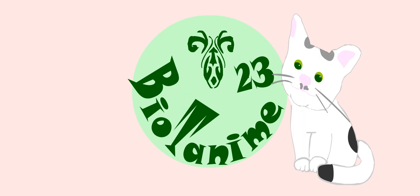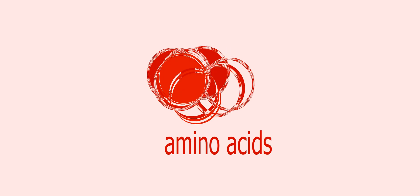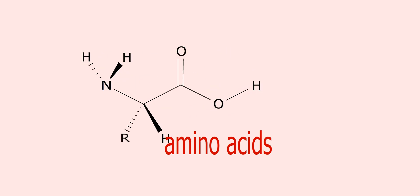Welcome to BiotAnime. Primary structure of protein. Amino acids are the basic building blocks of proteins. Their structure consists of three main groups.